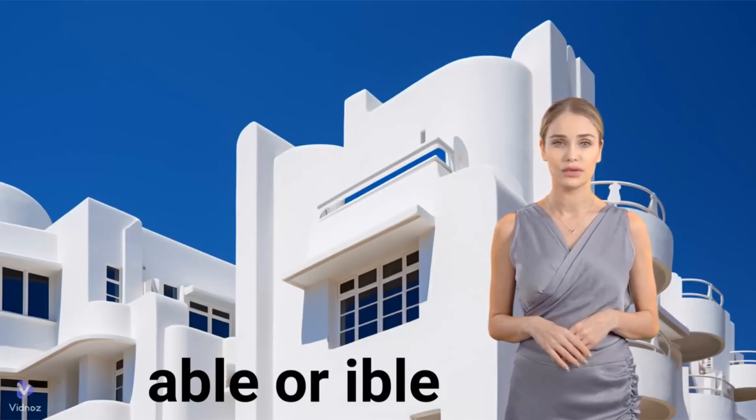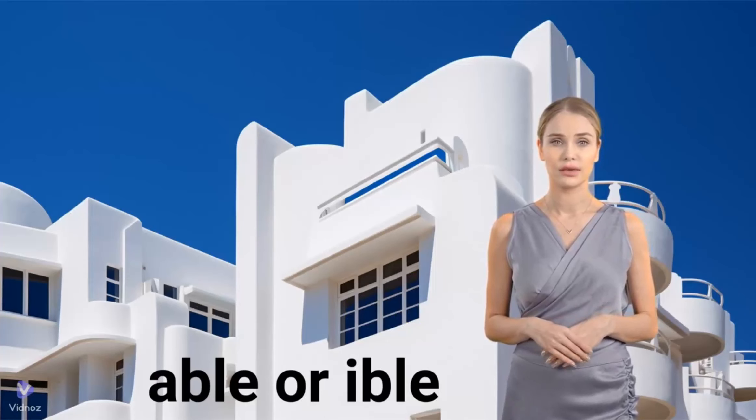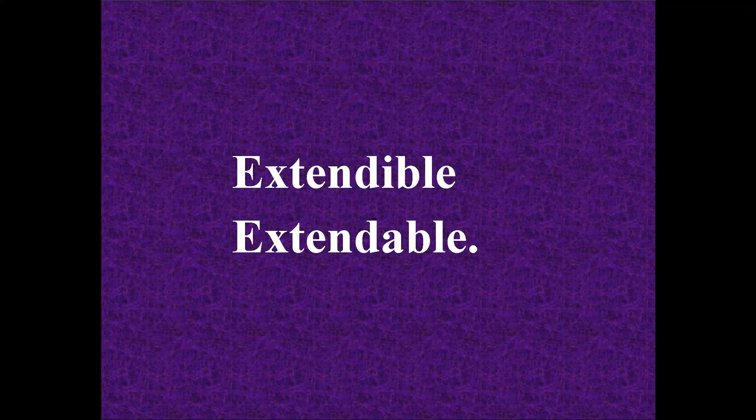There is a very small set of words which can be spelled with either -ABLE or -IBLE, for example 'extendable' or 'extendible.' Some words have different meanings depending on whether -IBLE or -ABLE is added. Example: 'Contractable' means that a disease is able to be contracted or caught, while 'contractible' means that an object is capable of contracting — becoming smaller.